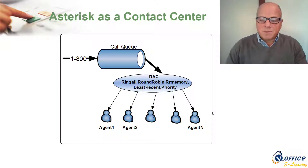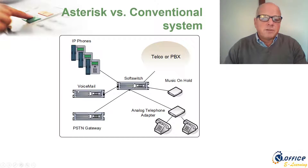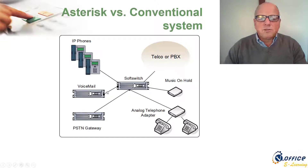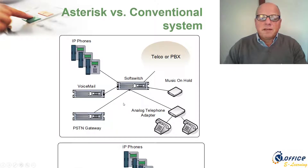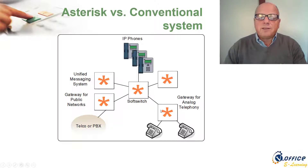In conventional systems, all components are separate — the soft switch, voicemail, PSTN gateway, analog telephone adapter, music on hold — each on a different box, usually one server for each. With Asterisk, you can have all of these in a single box: unified messaging, PSTN gateway, soft switch, and analog phone connectivity — everything on Asterisk.